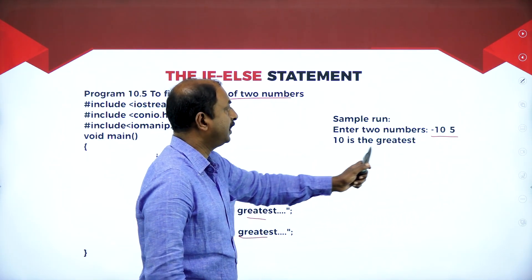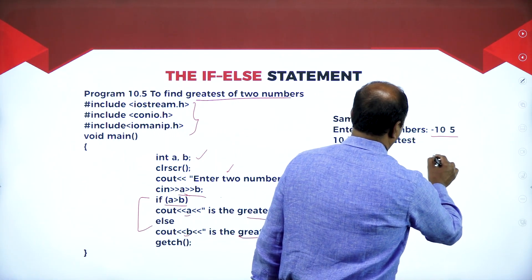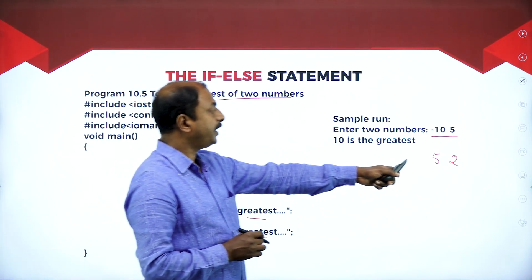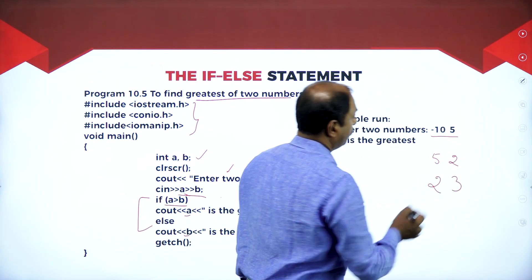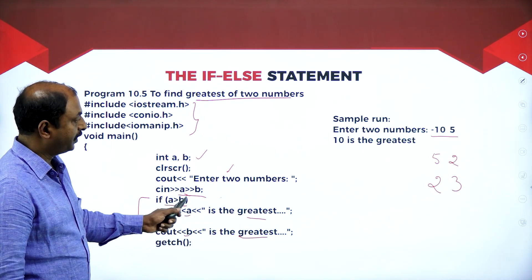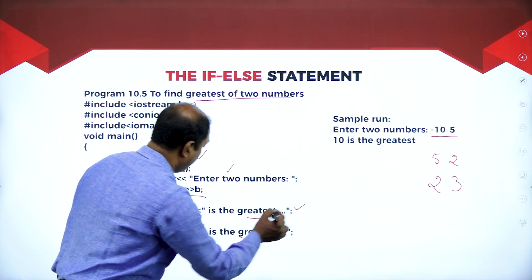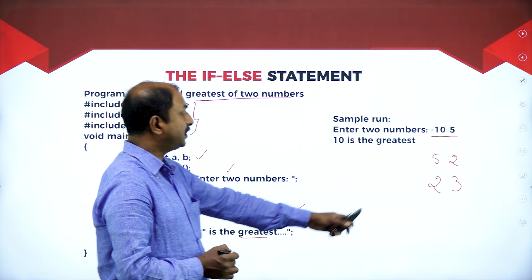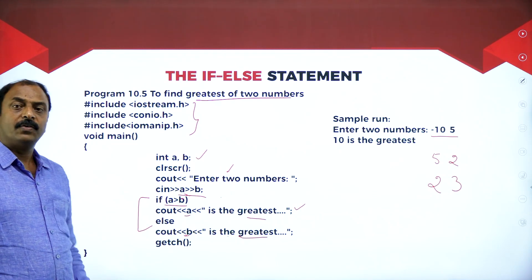If the input is 5 and 2, since 5 is greater than 2, the output is '5 is the greatest number.' If a is 2 and b is 3, the condition '2 greater than 3' fails, so it skips to the else and prints b as the greatest — output: '3 is the greatest number.' This demonstrates the functioning of the if-else statement.